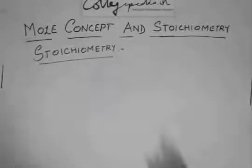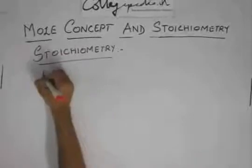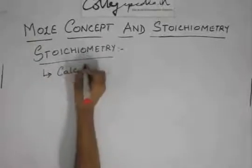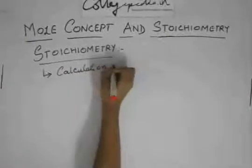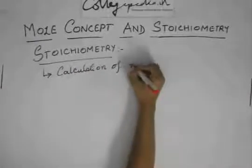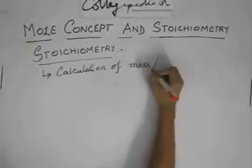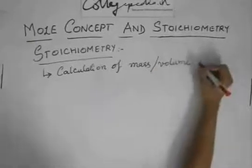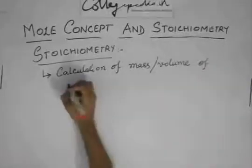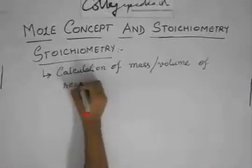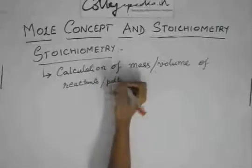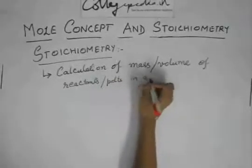Stoichiometry is nothing but simple calculation of mass or sometimes volume also of reactants or products, anything in a reaction.